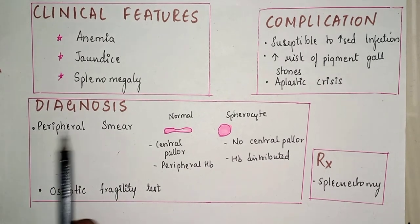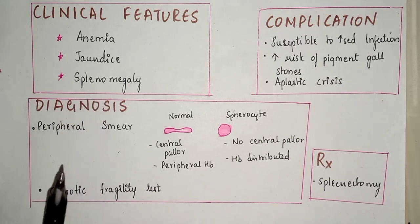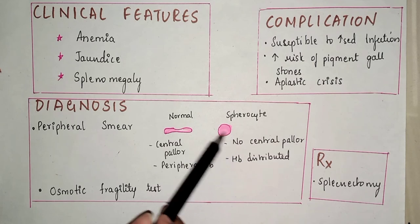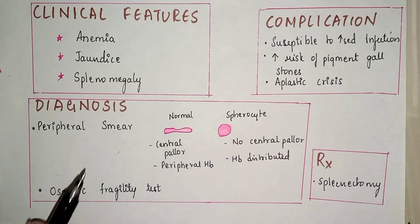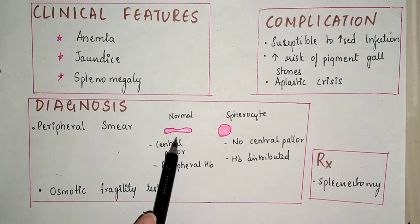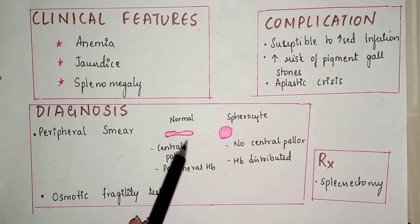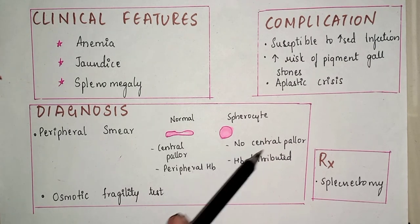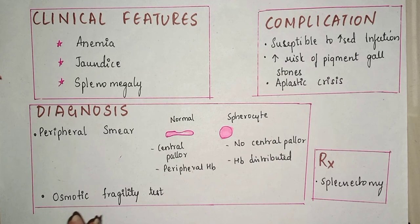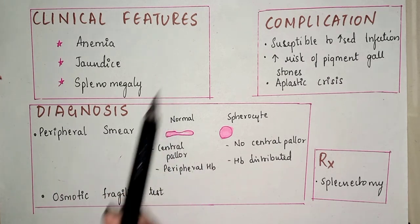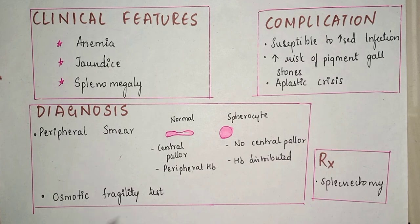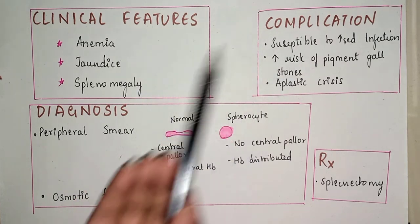Diagnosis: when you take a peripheral blood smear, in a normal RBC there is slight central pallor with hemoglobin distributed at the periphery. But in hereditary spherocytosis, there is no central pallor and hemoglobin is distributed equally. The osmotic fragility test is also used — RBCs are placed in a hypertonic solution in a test tube and assessed. This helps in the determination of hereditary spherocytosis.